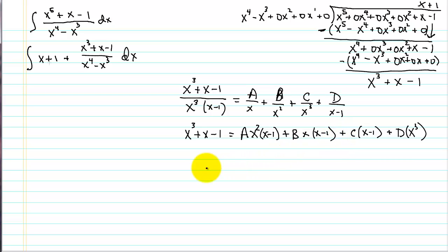So now we can start picking some values of x. Let's try x equals zero. So now we get negative one. If I put zero in here I get zero. So that's going to cancel out. That's going to cancel out. Here I get negative c. And that's going to cancel out. So we can pretty quickly here find that c equals one.